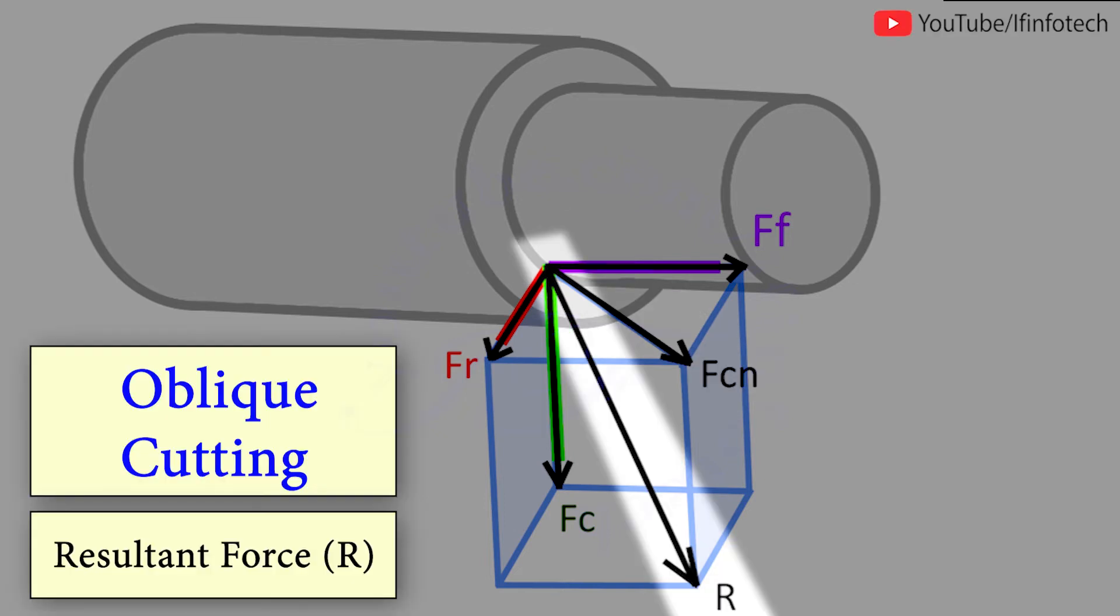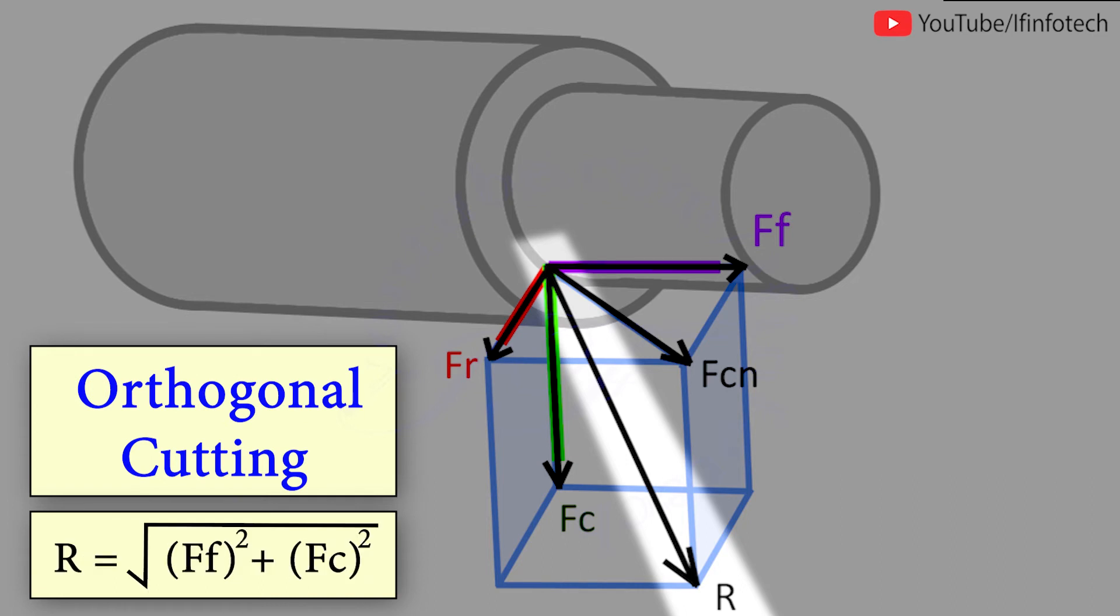Here the resultant force for oblique cutting system is given by the formula R equals square root of FF squared plus FR squared plus Fc squared. For orthogonal cutting system, the resultant force is given by R equals square root of FF squared plus Fc squared.